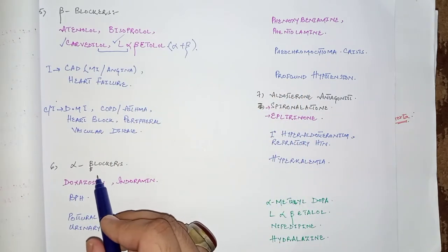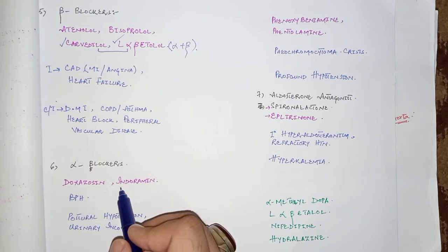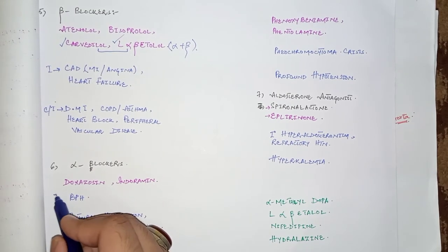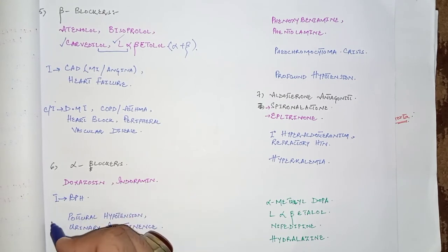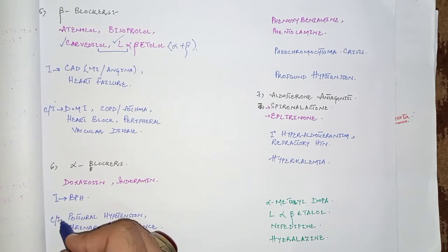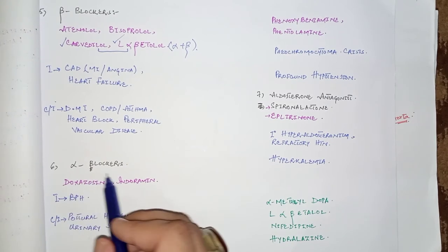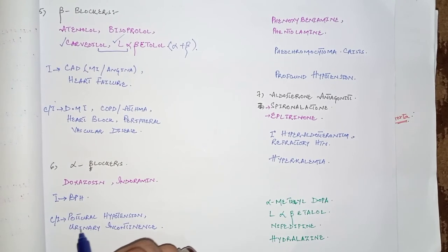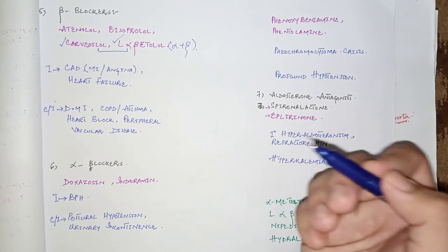The next class is alpha blockers, which are not commonly used. Alpha-1 blockers include doxazosin, indoramin, prazosin, and alfuzosin. The compelling secondary indication is benign prostatic hyperplasia (BPH) along with hypertension. These drugs should be used cautiously in patients who develop postural hypotension, as alpha blockers cause vasodilation, and in patients with urinary incontinence.